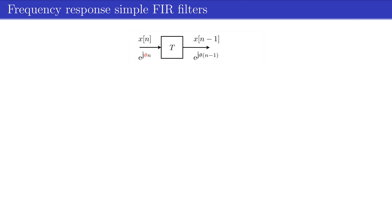When using a phasor with frequency theta as input of such a delay, we can find an expression for the output by replacing the time index n by time index n-1. We can split this expression into two terms. The first term, in blue, is a complex number which is a function of frequency theta. The second term is the same as the phasor at the input.